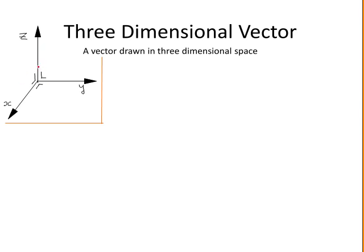These axes are at 90 degrees to each other, so the x-axis is at 90 degrees to the y-axis, and the z-axis is at 90 degrees to both the x and the y-axis.